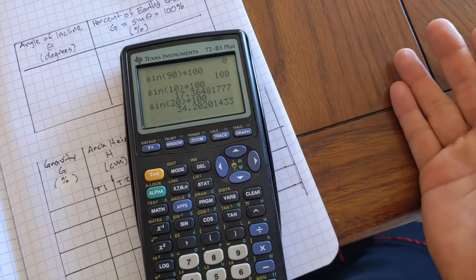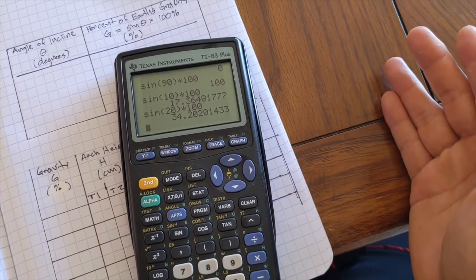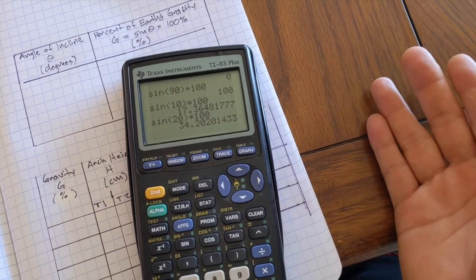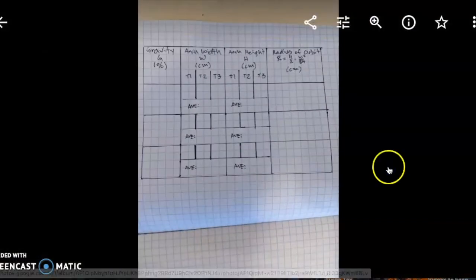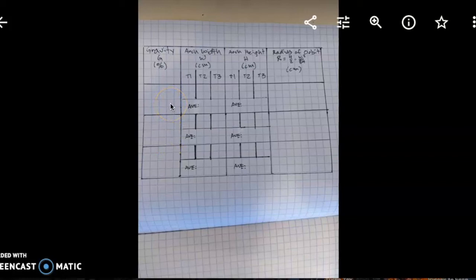When I change the angle, the greater the angle, the greater amount of gravity I'm representing. Now, once you have the percentage of gravity, then you can start filling out this chart. Three different percentages of gravity, not including the zero percent because that would have been a straight line, but you're going to have to measure the width of the arc in centimeters and the arc height in centimeters.